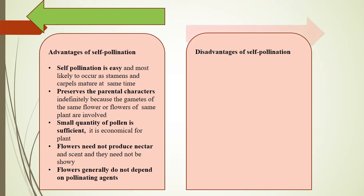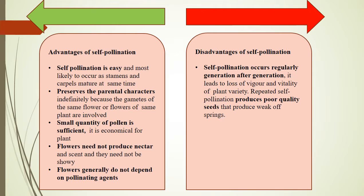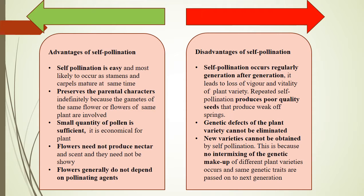Disadvantages of self-pollination: As self-pollination occurs regularly, generation after generation, it leads to loss of vigor and vitality of the plant variety. Repeated self-pollination produces poor quality seeds that produce weak offspring. The genetic defects of the plant variety cannot be eliminated. New varieties cannot be obtained by self-pollination, because no intermixing of genetic makeup of different plant varieties occurs and the same genetic traits are passed on to the next generation.